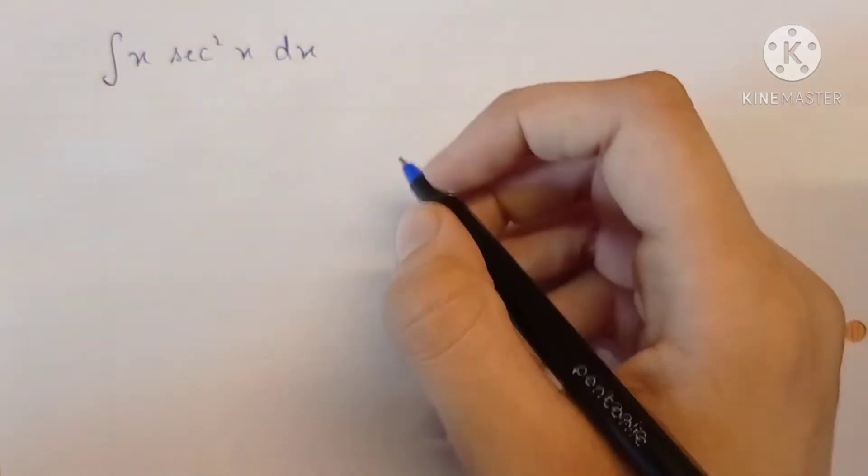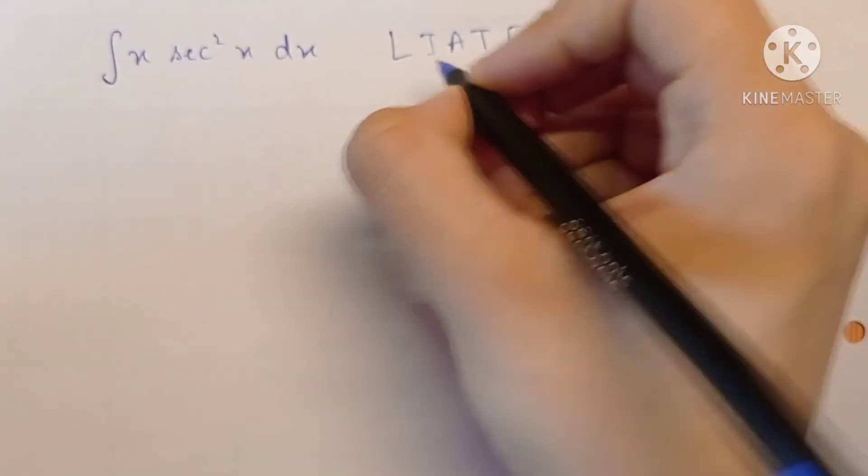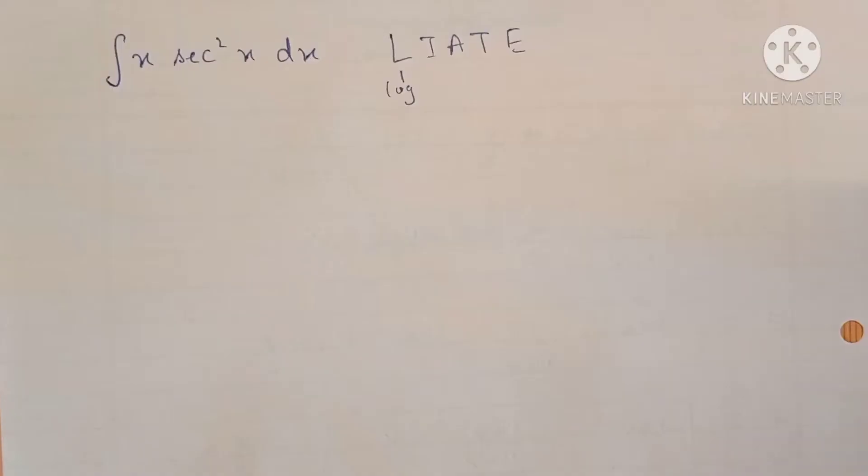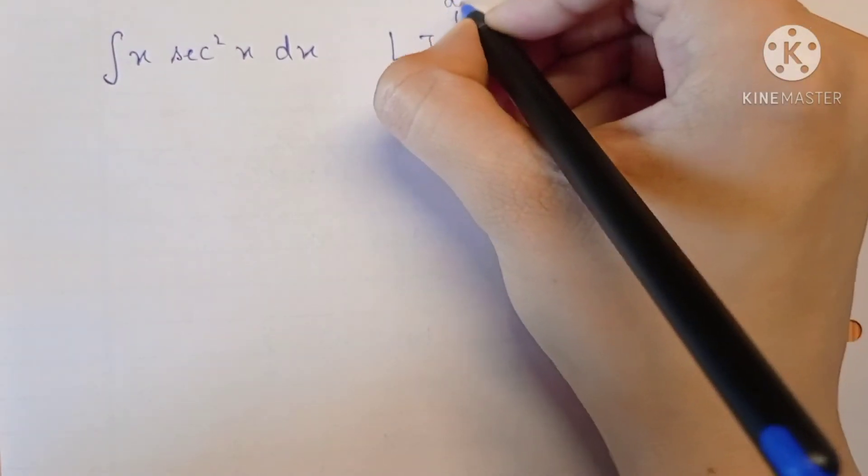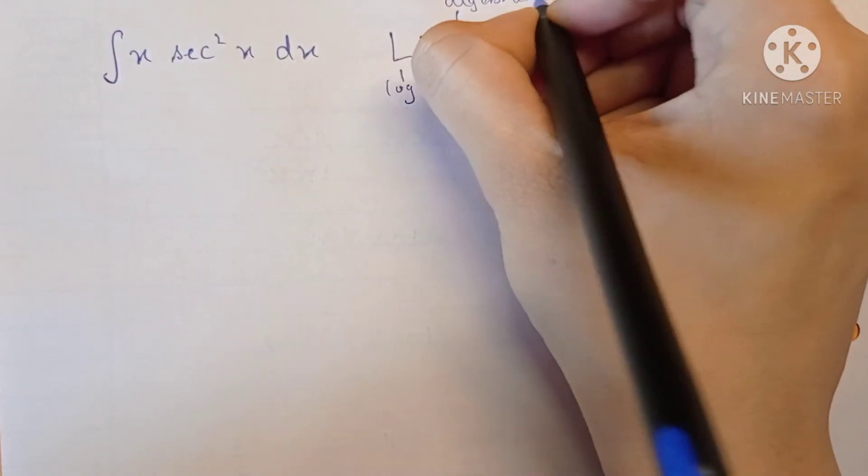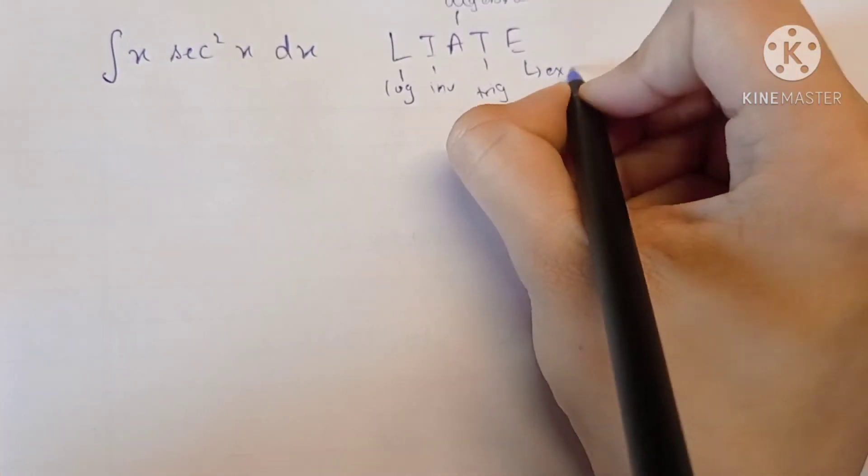We will be integrating it by parts using the LIATE rule, where L stands for log, I stands for inverse trigonometric functions, A stands for algebraic, T stands for trigonometric, and E stands for exponential functions.